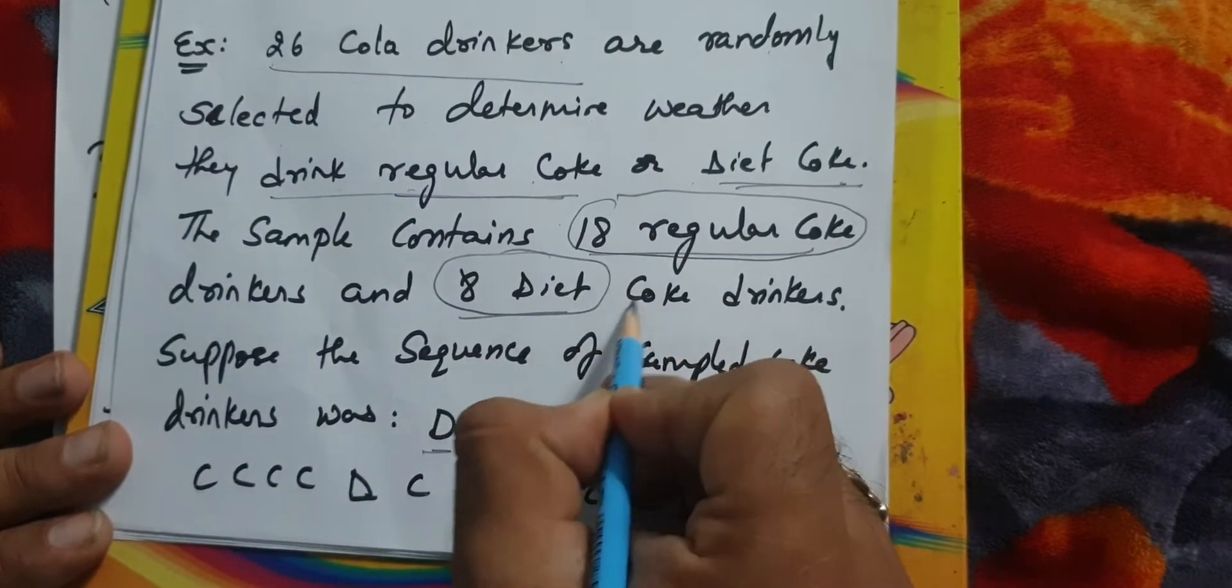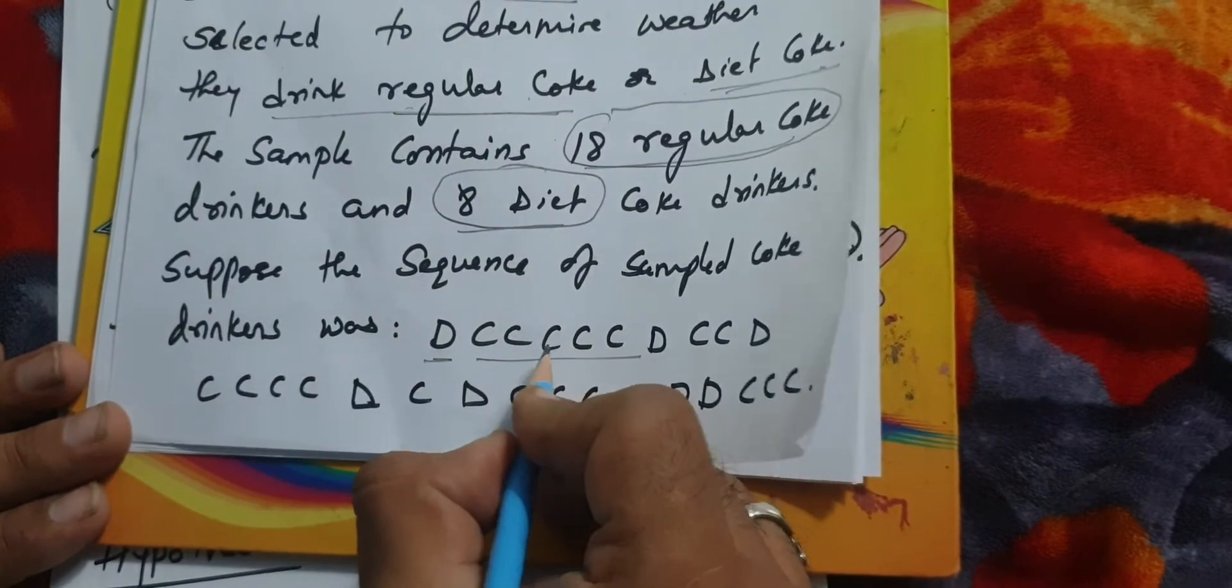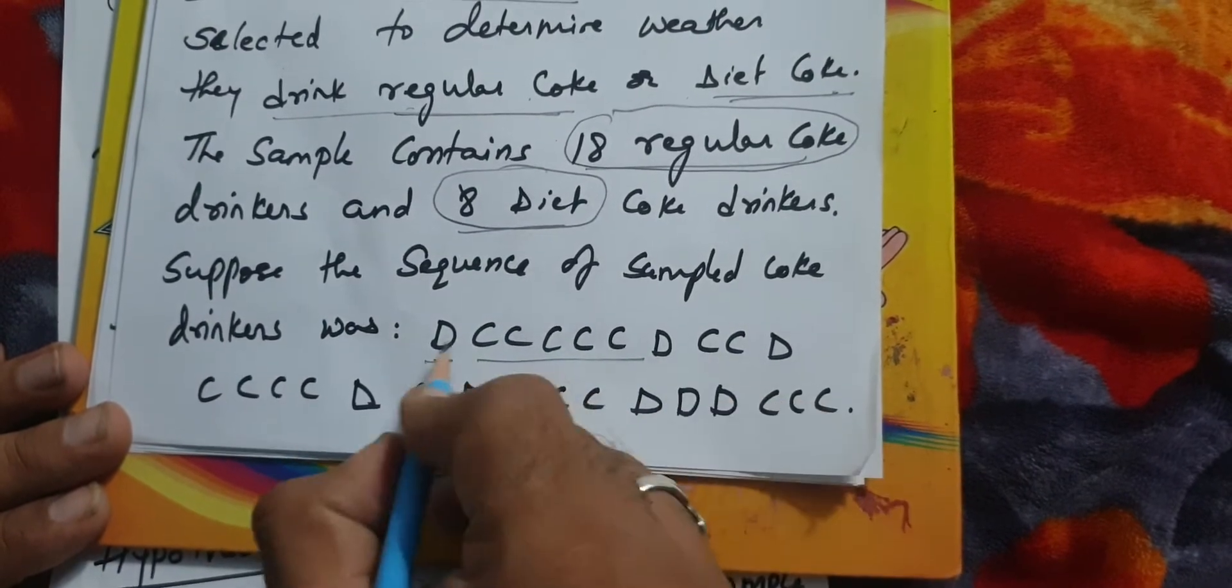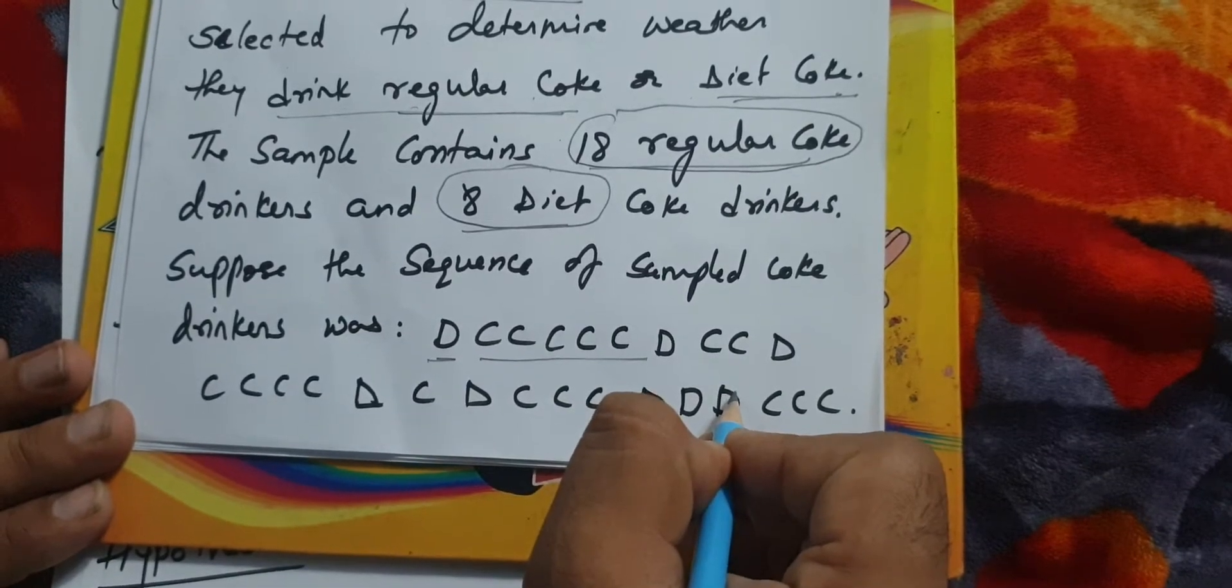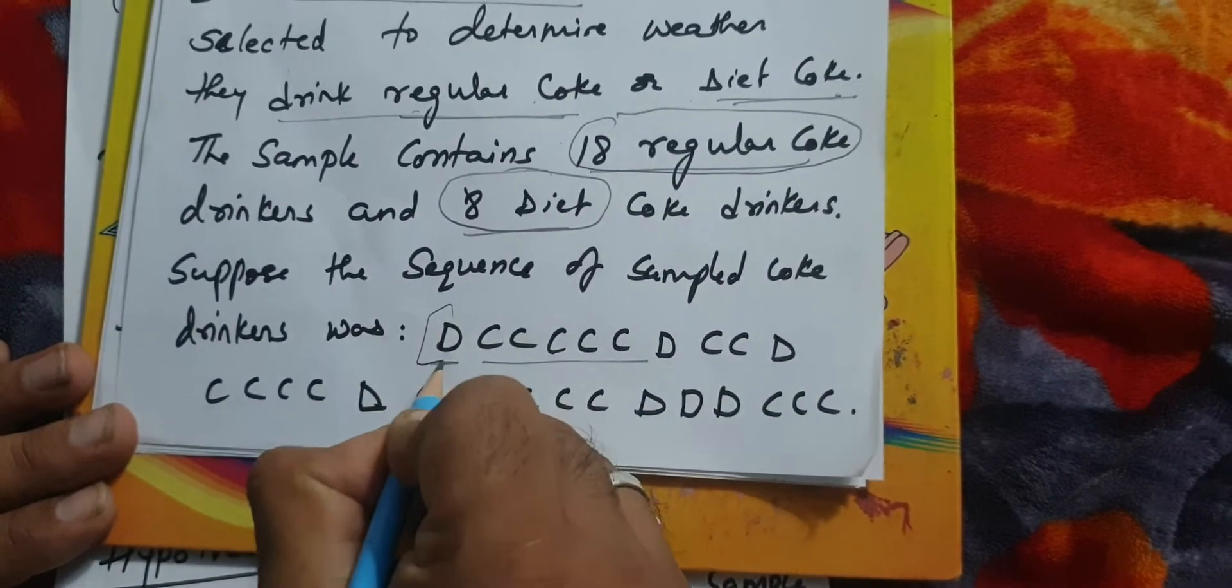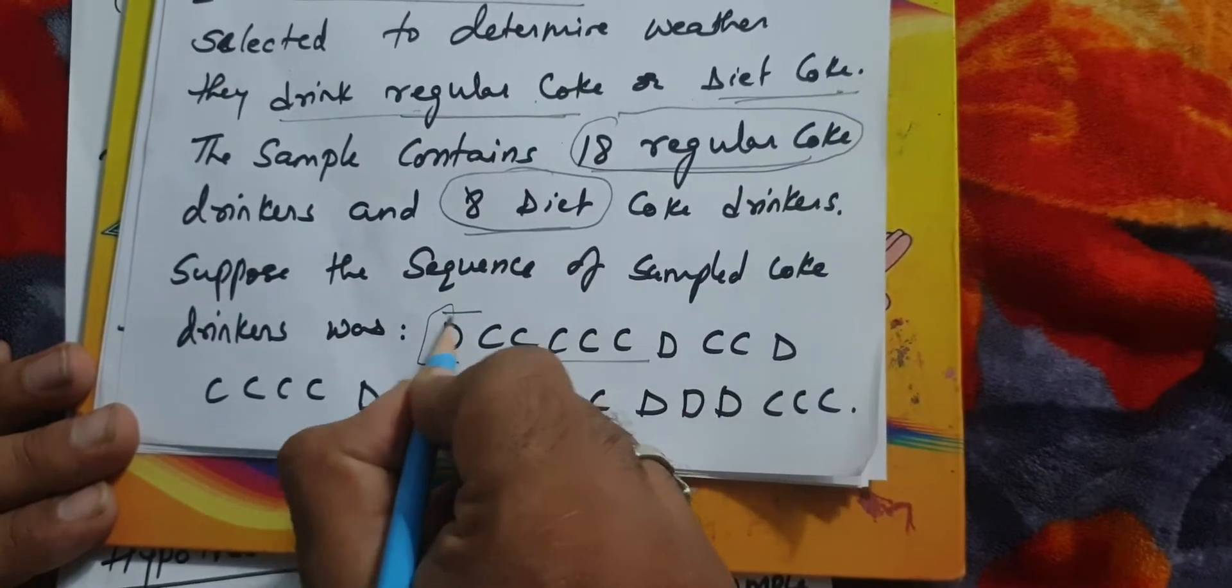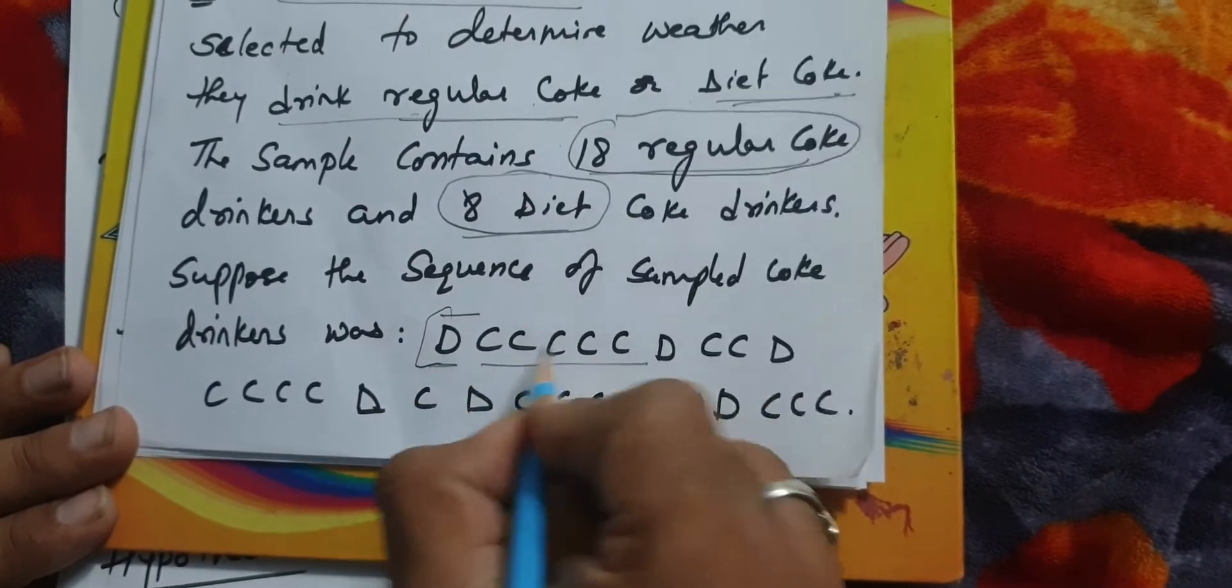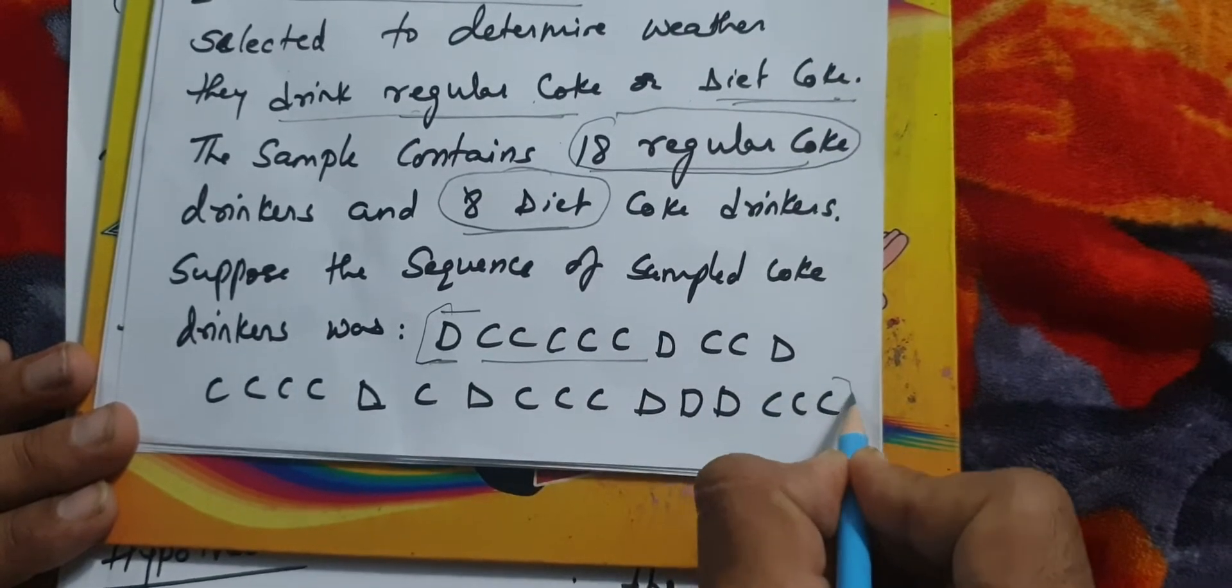We need to see the sequence of the sample that has been collected and whether the flows are random or not. In the question you would be given this kind of pattern where D represents diet coke and C represents regular coke.